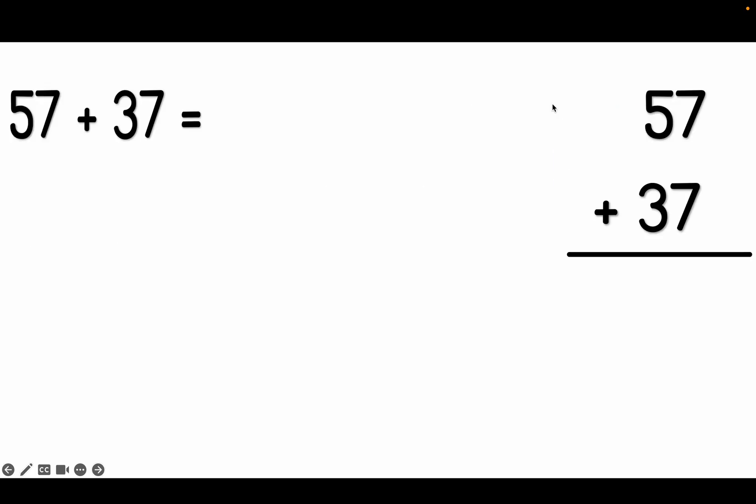Place value notation is just like using place value blocks, but this will allow you to draw it out instead of having the actual blocks. We are going to solve 57 plus 37. I have written the equation in both vertical and horizontal form.